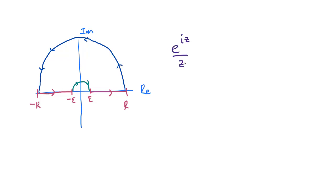The reason for using e to the iz will become apparent soon, but for now let me just say the exponential function is sometimes better behaved than the sine function. So we're going to use e to the iz instead.